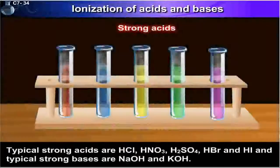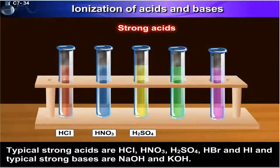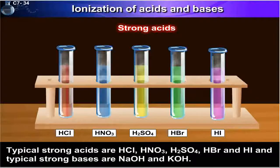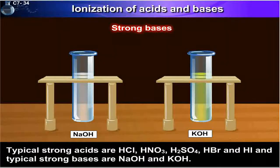Typical strong acids are hydrogen chloride, nitric acid, sulfuric acid, hydrogen bromide, and hydrogen iodide. And typical strong bases are sodium hydroxide and potassium hydroxide.